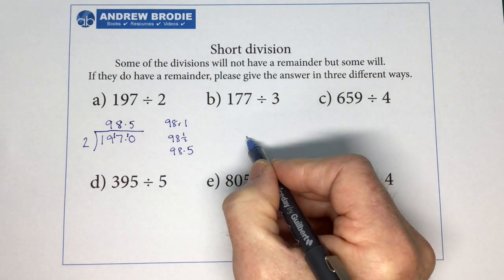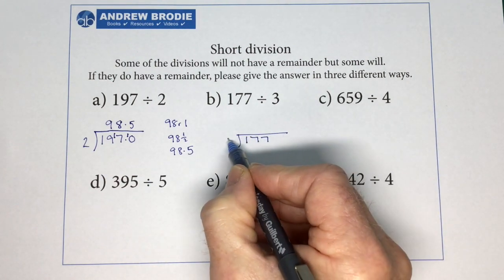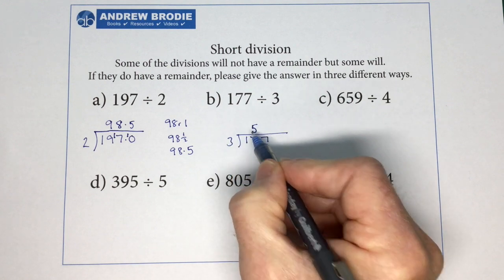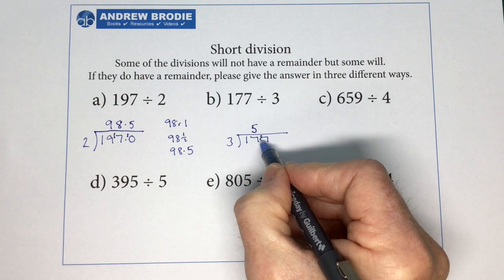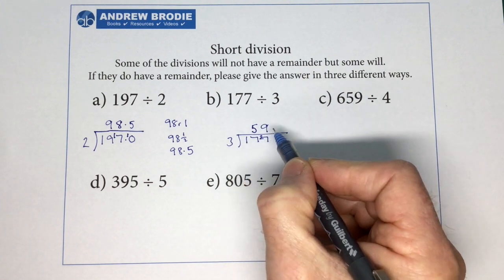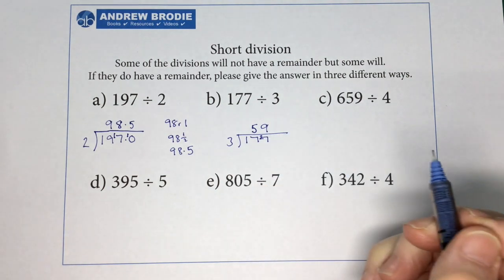Question B. 177 divided by 3. 3 into 17 goes 5 times. 5 3s are 15, so there's 2 left over we can put with the 7. How many 3s in 27? Exactly 9. So there's no remainder, and that one's finished.